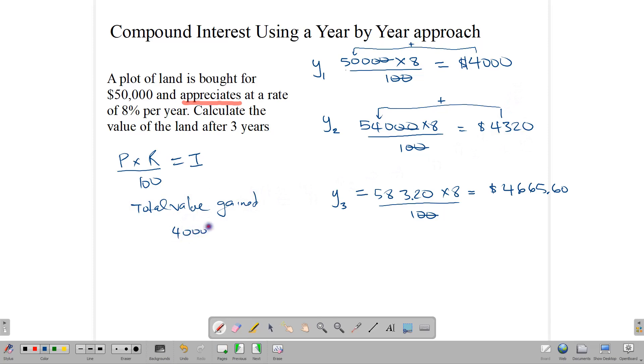So, we have $4,000 plus $4,320 plus $4,665.60. So, we add up all of those. And adding those gives us $12,985.60. So, the land will go by this value, which means that the value of the land after three years would be value. So, the value after three years is $50,000 plus $12,985.60. And that gives us a total of $62,985.60. This would be the value of the land after three years.